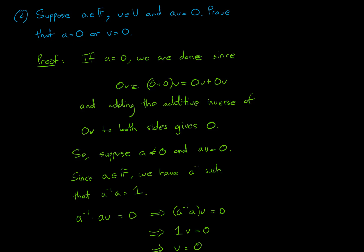Well if the scalar is zero, we're done, because zero times any vector will give you the zero vector. But we want to know about the case where a ≠ 0.